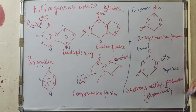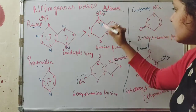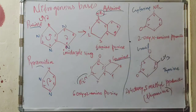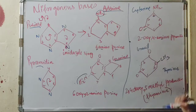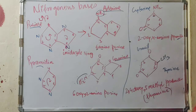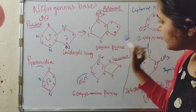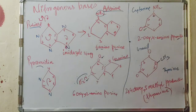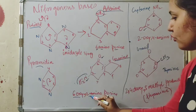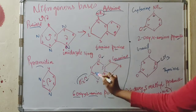Now let us name the bases. For adenine: at the sixth carbon we have an amino group — so it is 6-amino — and this is a purine ring, so the name is 6-aminopurine. For cytosine: at the second carbon we have oxygen (2-oxy), at the fourth carbon we have an amino group (4-amino), and it is a pyrimidine ring — so the name is 2-oxy-4-aminopyrimidine. For guanine: at the sixth carbon we have oxygen (6-oxy), at the second carbon we have an amino group (2-amino), and it is a purine ring — so the name is 6-oxy-2-aminopurine.